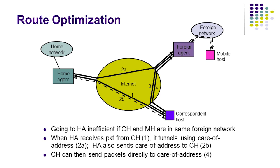One solution is illustrated here. When the home agent receives a packet from a correspondent host destined to a mobile host, as illustrated by step 1, it tunnels the packet to the current care-of address, as illustrated by step 2a. However, it also sends a binding message back to the correspondent host containing the current care-of address, as illustrated by step 2b. The correspondent host can save this information in its binding cache so that future packets to the mobile host can be directly tunneled to the care-of address, as illustrated by step 4. This concludes our lesson on mobile IP.